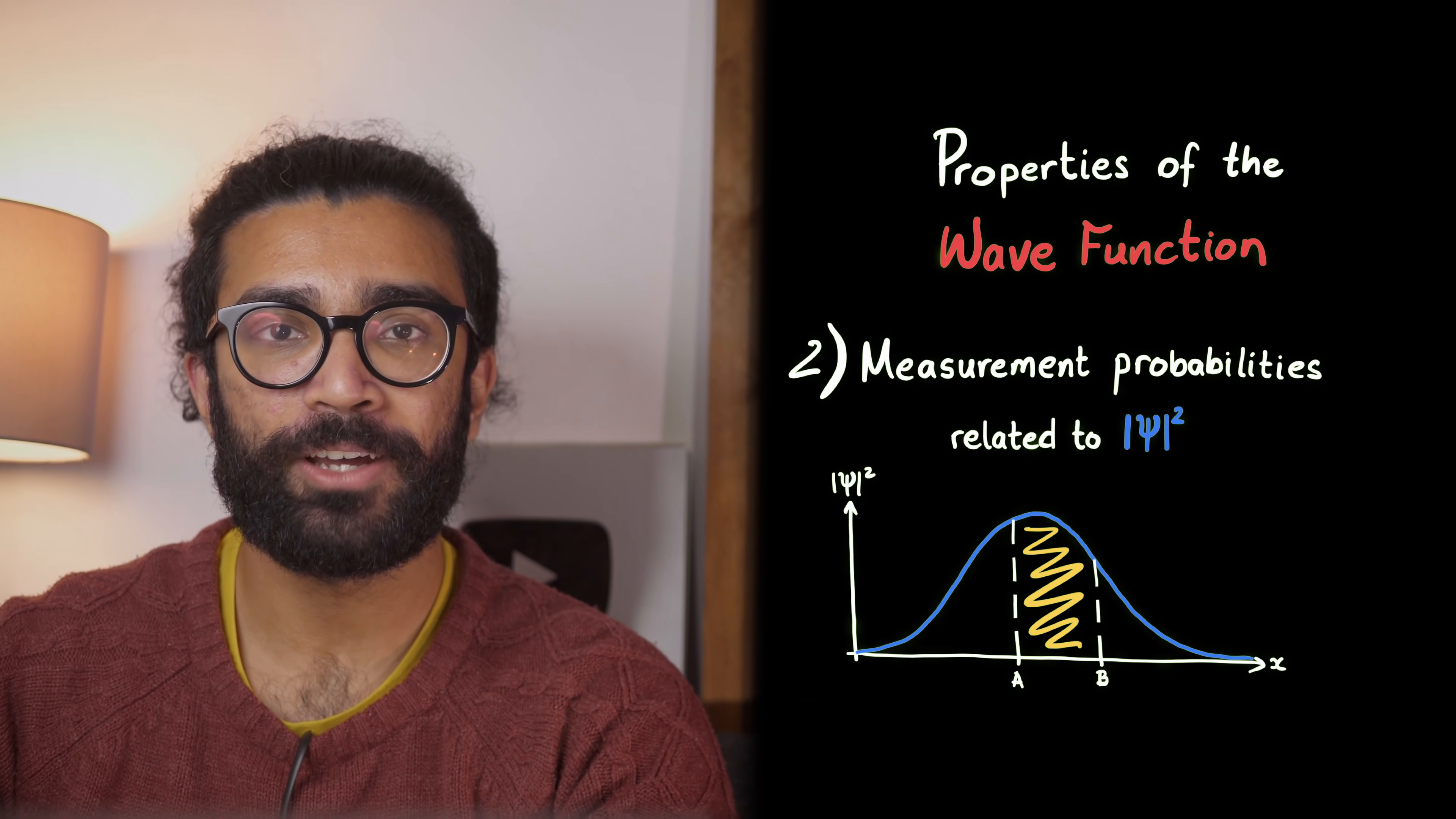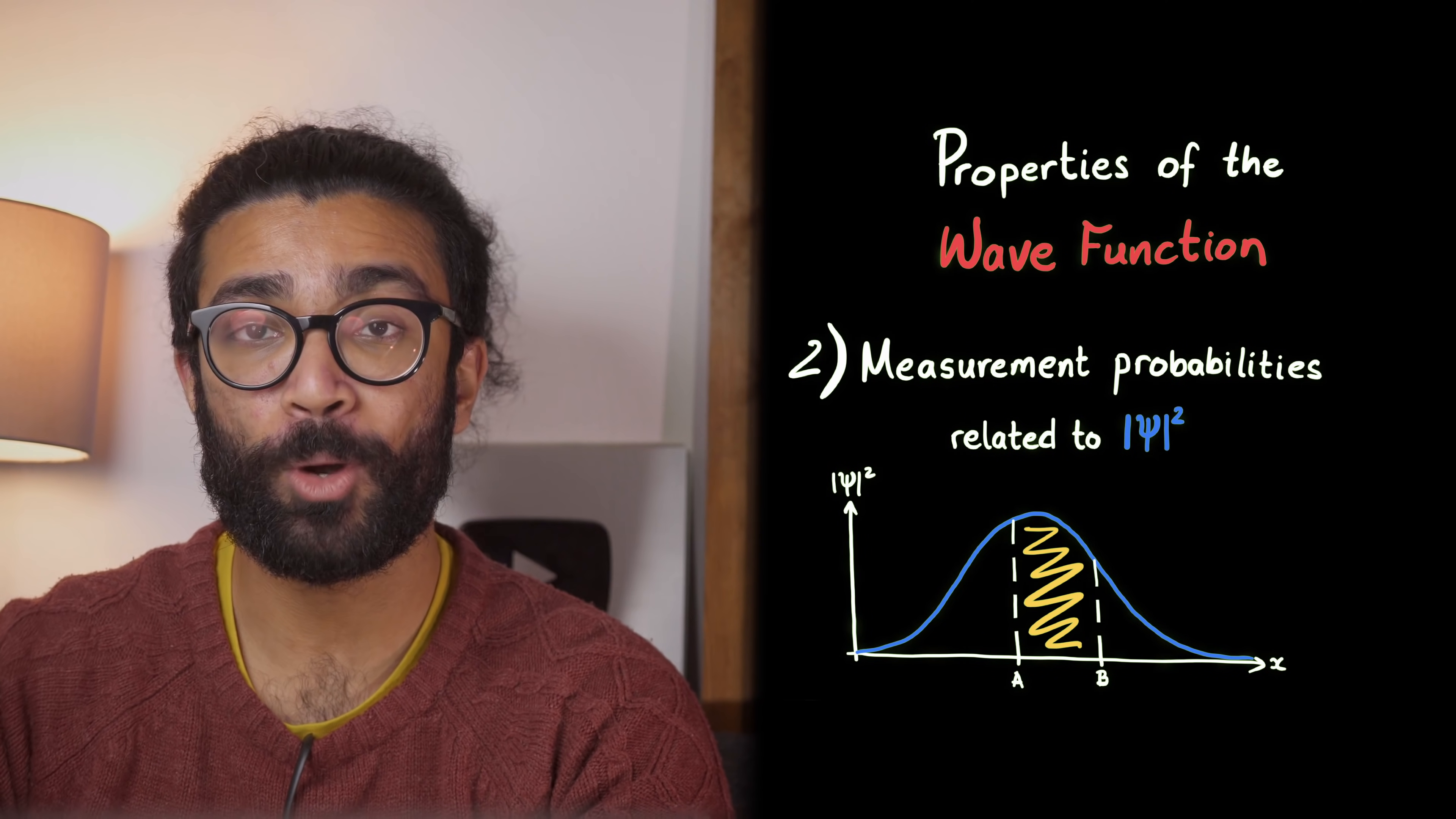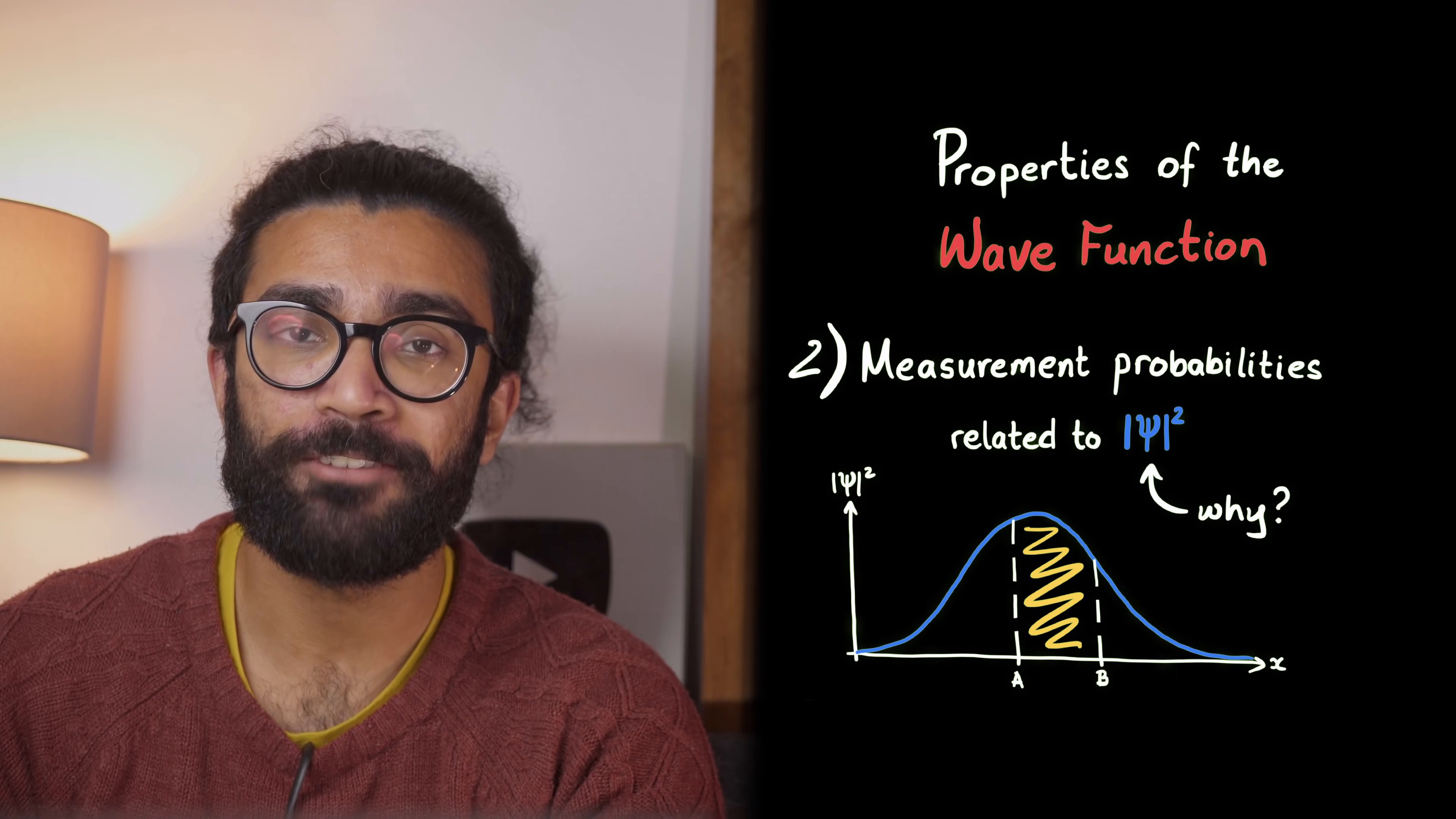The probability of an experimental measurement, so for example the chances of finding our electron here when we try to measure it, is related to the square modulus of the wave function. Why? Again, we're not yet fully sure. This is another postulate of quantum mechanics.